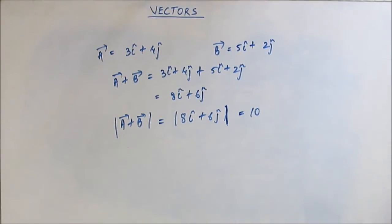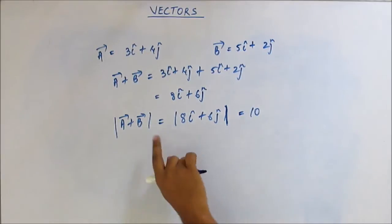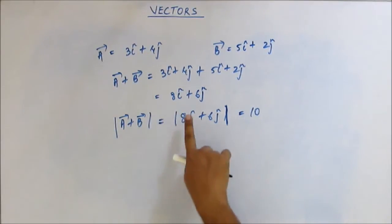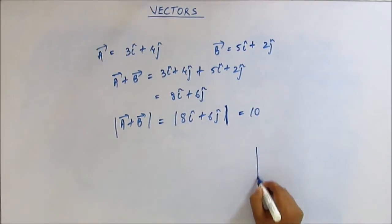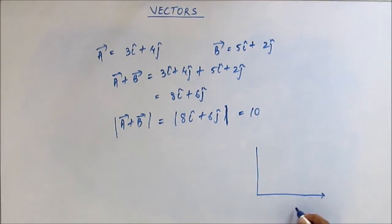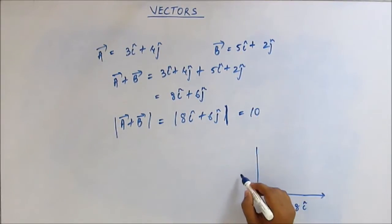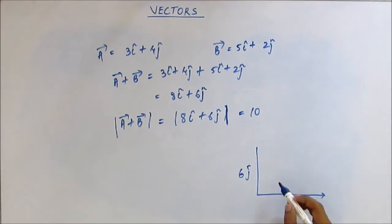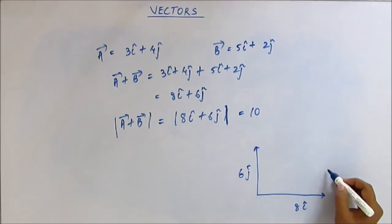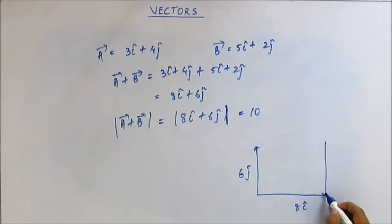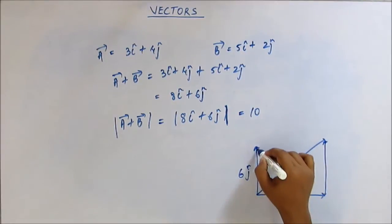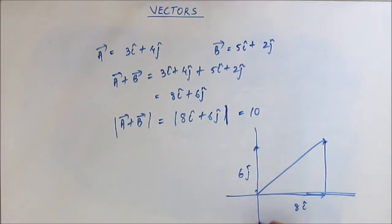That is easy because we already have a ready-made formula. Now this resultant vector is the summation of these two vectors: 8i-cap and 6j-cap. If we apply the triangular law of addition, this is the resultant vector along the axis, and we want to find this angle.